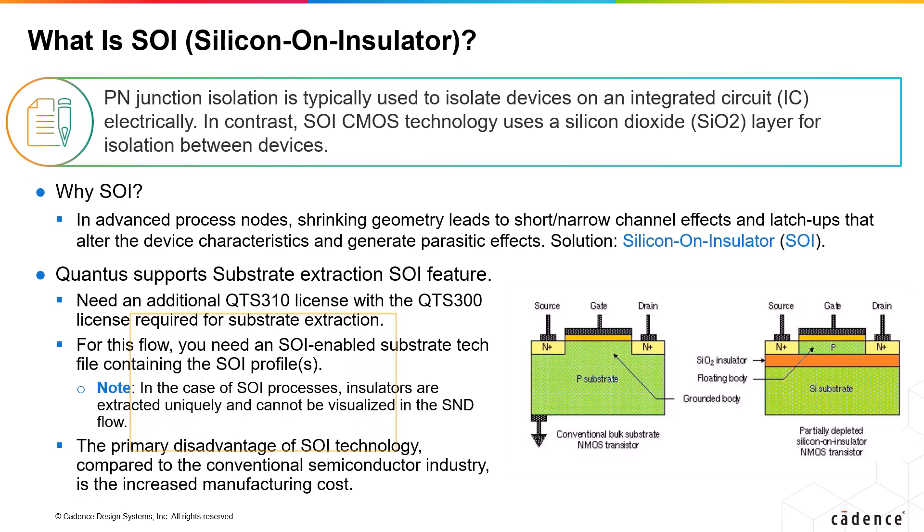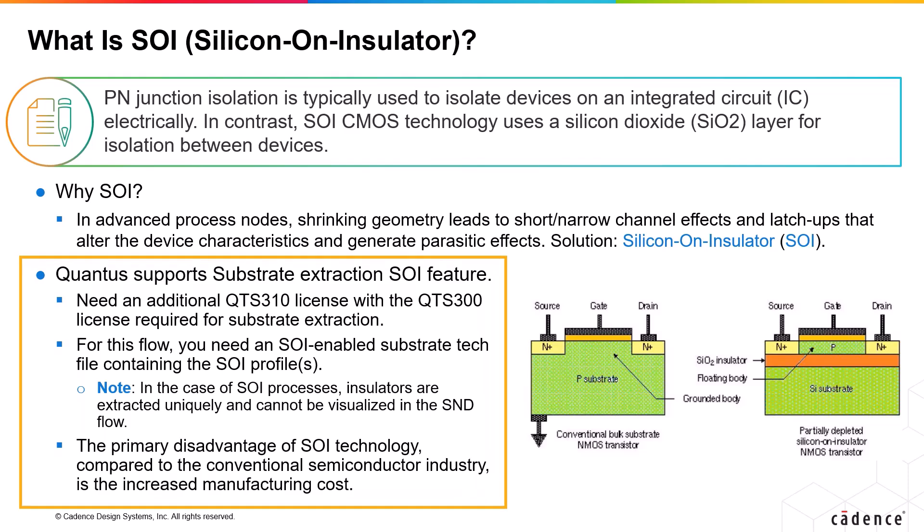Starting from the Qantas 22.1 release, the substrate extraction SOI feature is made production, and can be enabled using an additional QTS310 license, in addition to the QTS300 license required for substrate extraction.